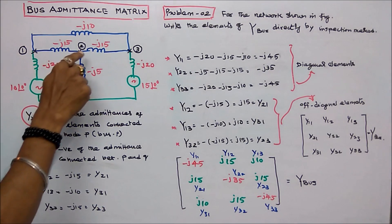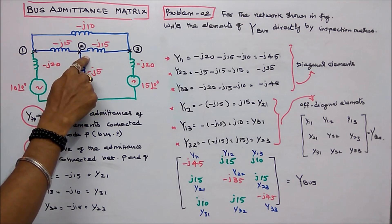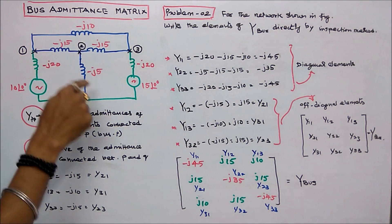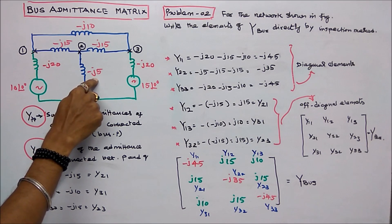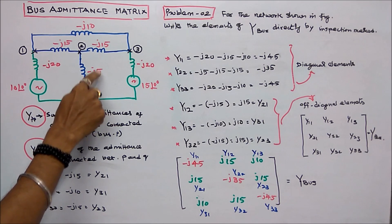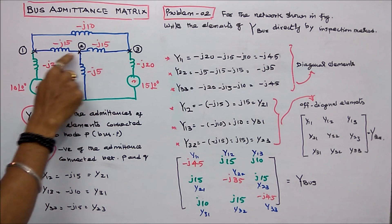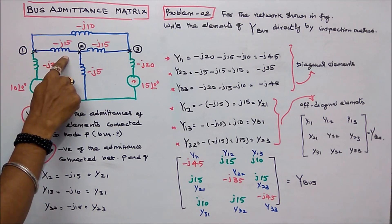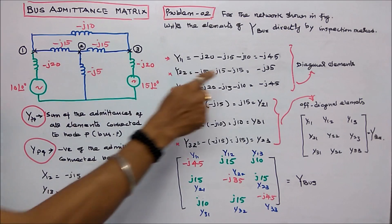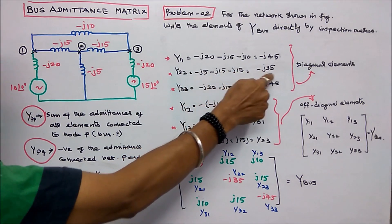Y22 has three elements connected: minus J5, minus J15, and minus J15. That equals minus J35.